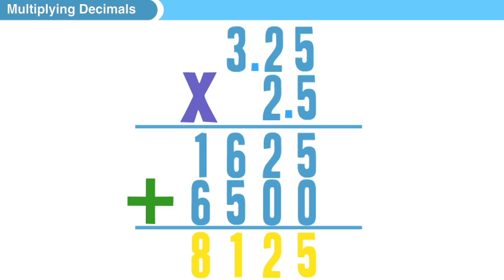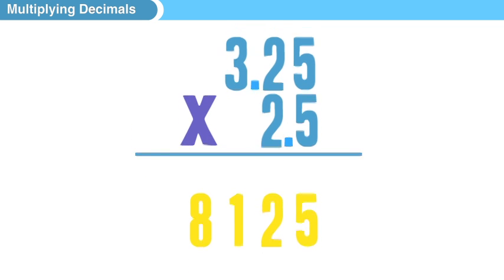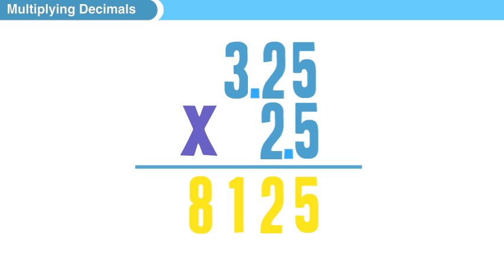Now here is the only tricky part of this, and it's really not all that tricky. Okay, you want to look up top and count how many numbers were to the right of the decimal in our first two numbers. So 3.25 has two numbers to the right of the decimal, and 2.5 has one number to the right of the decimal. So that's three numbers total.